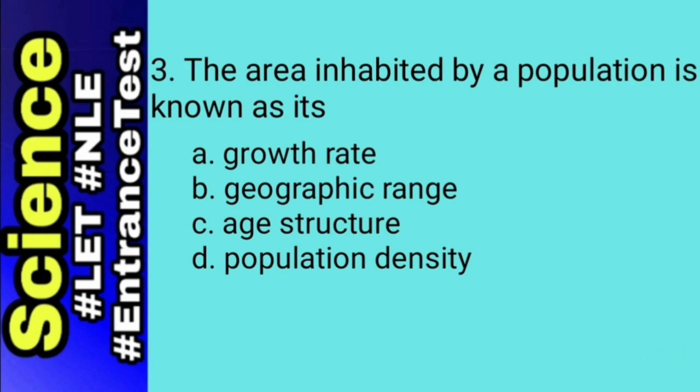Letter C, age structure refers to the number of males and females of each age a population contains. And lastly, letter D, population density refers to the number of individuals per unit area. Therefore, the answer for number 3 is geographic range, letter B.